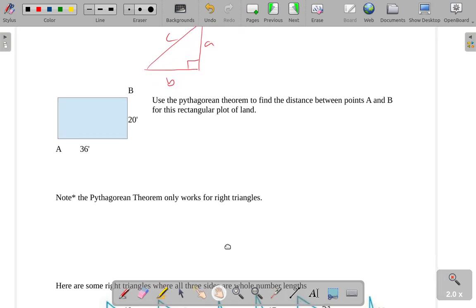So let's use the Pythagorean Theorem to find the distance between A and B for this rectangular plot of land. We have a plot of land that's a rectangle. It's 36 feet this way and 20 feet this way. We're trying to figure out what is this distance. Well, if this is a rectangular plot, that means each of these angles is a 90-degree angle.